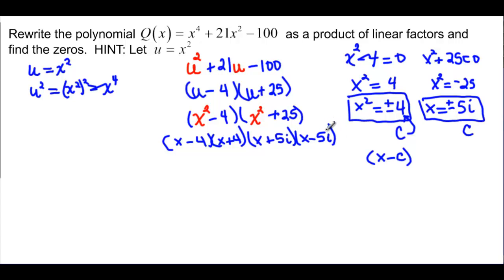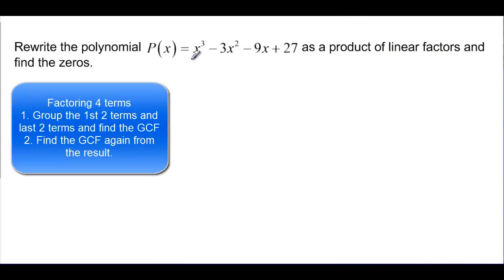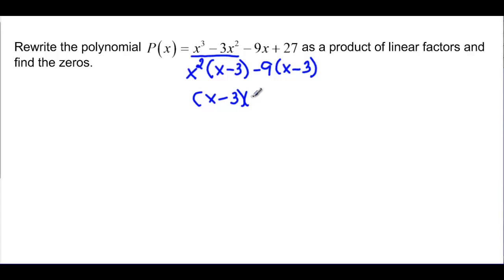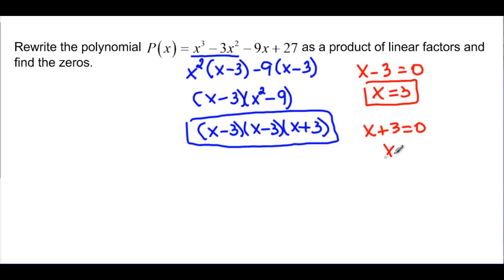Now let's write another polynomial as a product of linear factors and find the zeros. We have four terms, so let's try factoring by grouping. Taking a common factor of x² from the first two terms leaves (x - 3), and taking a common factor of -9 from the last two also gives (x - 3). So we get (x - 3)(x² - 9). Then factor x² - 9 further as (x - 3)(x + 3).